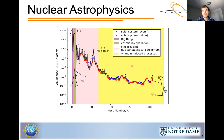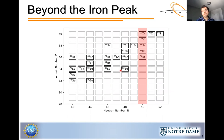Beyond the iron peak, the Coulomb barrier is insurmountably large and fusion is endothermic. Nucleosynthesis beyond the iron peak instead proceeds with a gamma-induced process and two neutron-induced processes. The gamma-induced process is called the gamma process, and the two neutron-induced processes are the slow neutron capture process (s-process) and the rapid neutron capture process (r-process). In the s-process, an unstable nuclide produced from neutron capture will undergo beta decay before capturing another neutron, and therefore the path of the s-process proceeds close to the valley of stability.